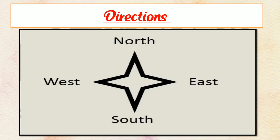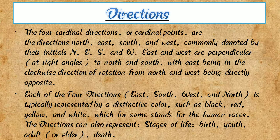Now next, directions. Here we can see four directions: north, east, south, and west. Directions are most important things in our country and also in our life. The four cardinal direction points are north, east, south, and west. These are commonly denoted by their initials N, E, S, and W.